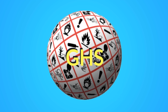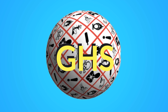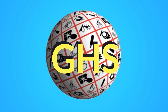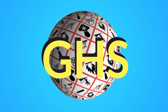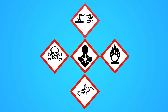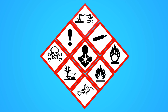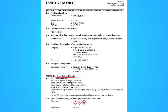The globally harmonized system, or GHS, makes identifying hazardous materials a relatively simple process. Using nine standardized symbols on all labels and documents, GHS provides a worldwide approach to classifying chemicals. The GHS symbol that should be used is indicated in Section 2 of the manufacturer's SDS.